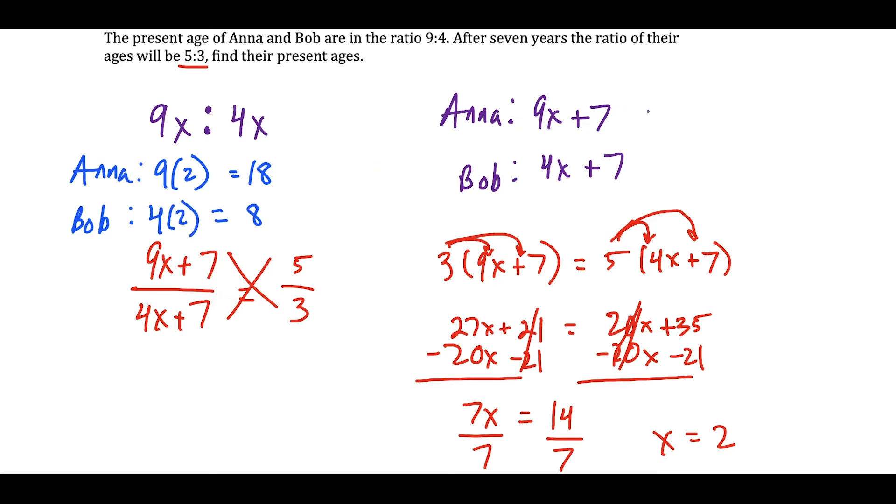Now if you think about this, just to check to see that we did this correctly, 7 years later, if we did 9 times 2, which is 18 plus 7, we would get 25. If we did 4 times 2 is 8 plus 7 is 15, we would get Bob's age 7 years later is 15.